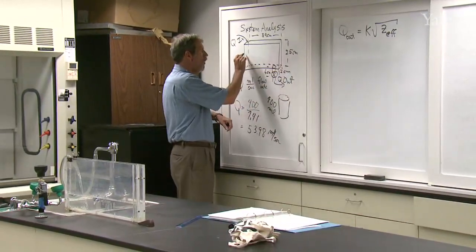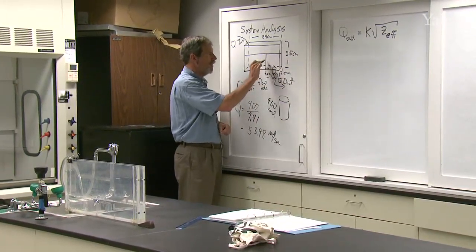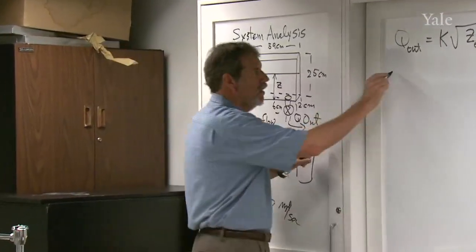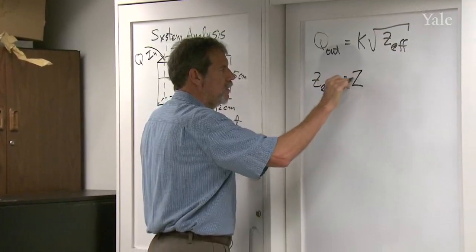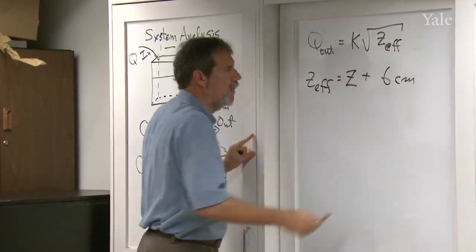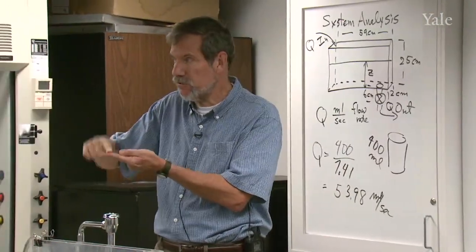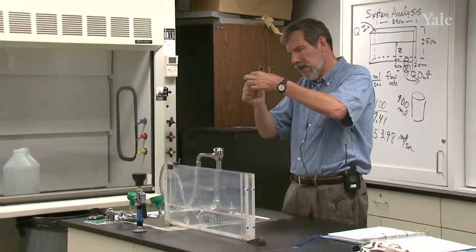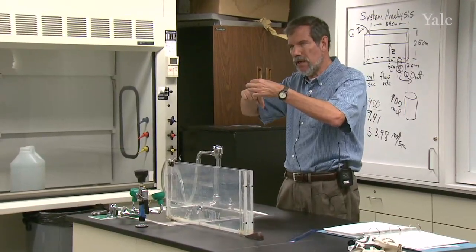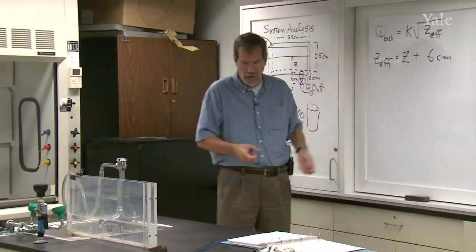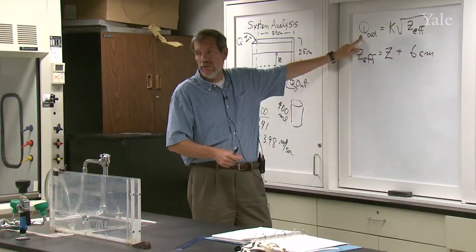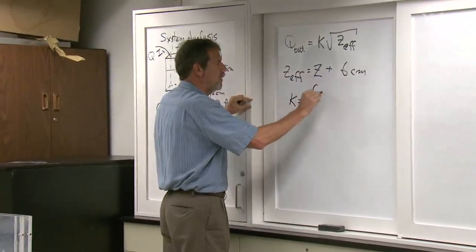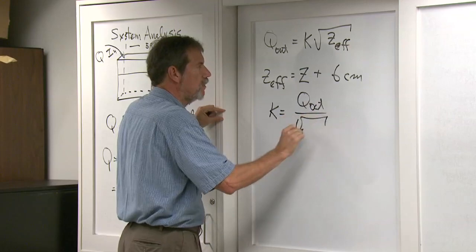I think you would expect that the deeper the water, the more pressure there is trying to push water through the valve. And so the faster Q out will be, the larger Q out will be. So we have to determine this constant. This constant will depend on how I have that exit valve set. And if I were to change it, I'd have to redo the calculation of K again. But I'm going to leave it like it is. We're going to let this come to a steady state for a minute. Now, what is Z effective? If the water depth is here, we measure Z as the height from the bottom of the tank up to the water top. And then we add 6 centimeters to it. So Z effective is Z plus 6 centimeters.